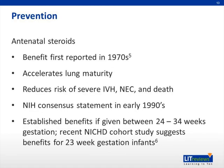Finally, that brings us to prevention. Since the 1970s, there have been reports of antenatal steroids improving lung maturity. When studied rigorously, antenatal steroids also seem to reduce other severe comorbidities of prematurity as well. Given overwhelming data, the NIH has been behind the use of antenatal steroids to prevent RDS since the 1990s. The benefits are clear between 24 and 34 weeks gestation, and more recent data would suggest that antenatal steroids are actually beneficial for infants as young as 23 weeks as well.